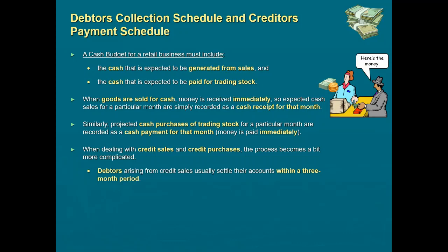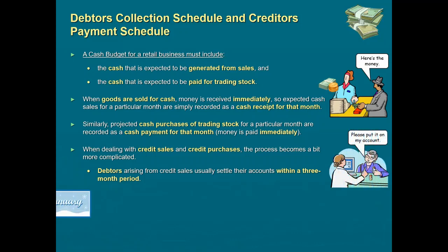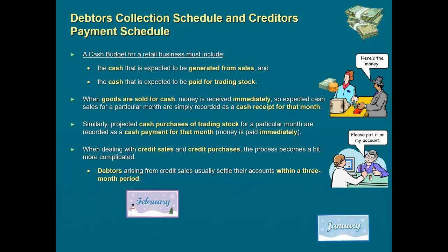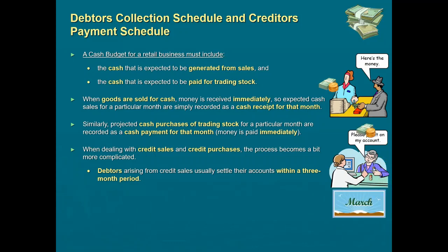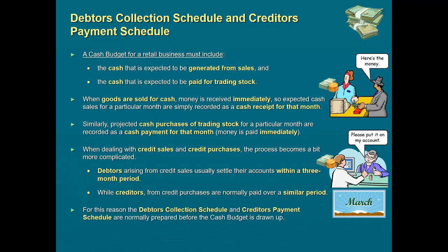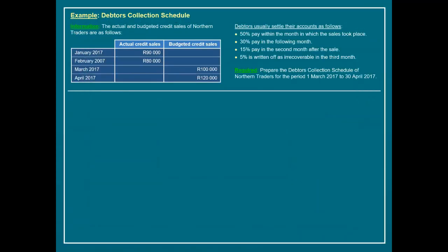Debtors arising from credit sales usually settle their accounts within a three-month period, while creditors from credit purchases are normally paid over a similar period. For this reason, the debtors collection schedule and creditors payment schedule are normally prepared before the cash budget is drawn up. We are going to focus on the debtors collection schedule in this video.